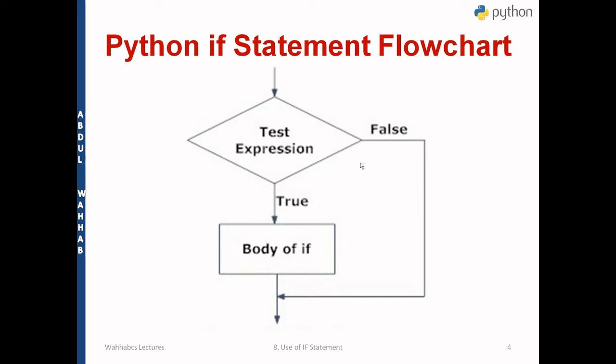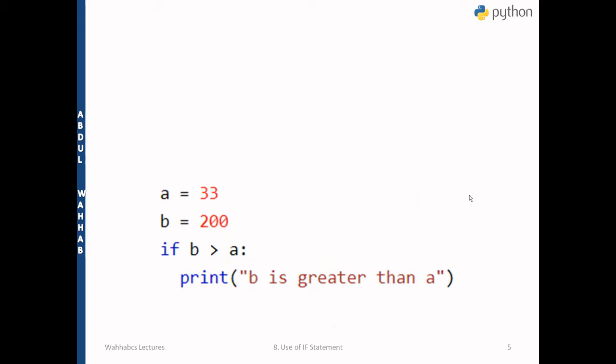Let's talk about the basic structure using a flowchart, so we understand how to use the if statement. Suppose we have a test expression — a condition that can be either true or false. If it is true, the body of that code will be executed and then we move on. If it is false, that code block is skipped and we may use some other code instead.